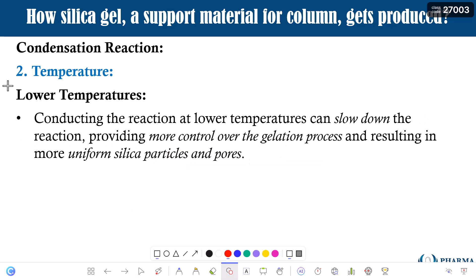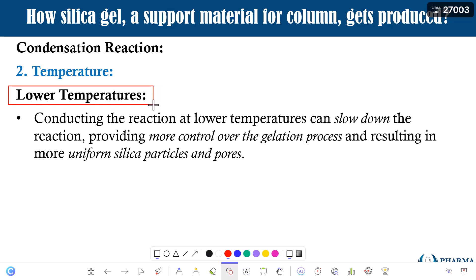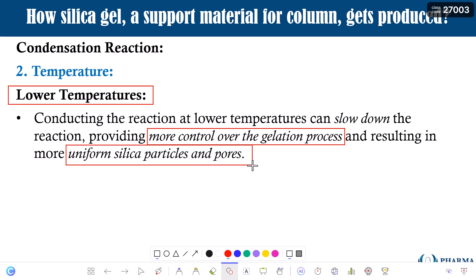At low temperature, obviously the rate of reaction is slow and it will take longer time to complete the condensation reaction. But the very important point is that it is going to be a more controlled gelation process, and that results in uniform silica particles and pores. It is very important how the silica gel manufacturer controls these critical process parameters like pH and temperature.